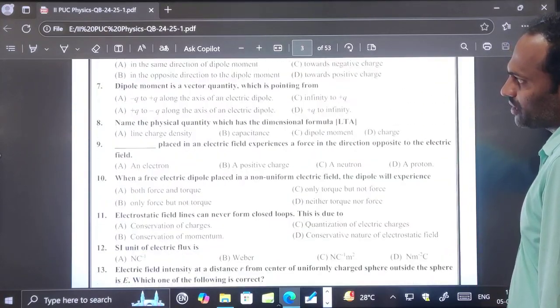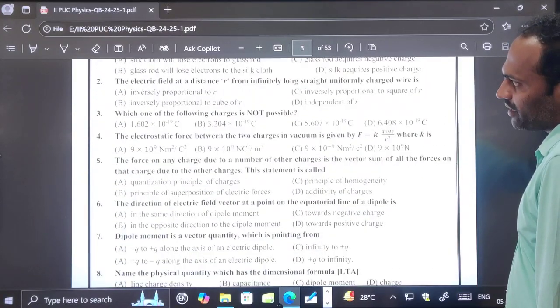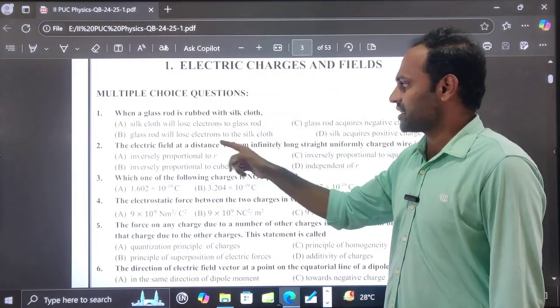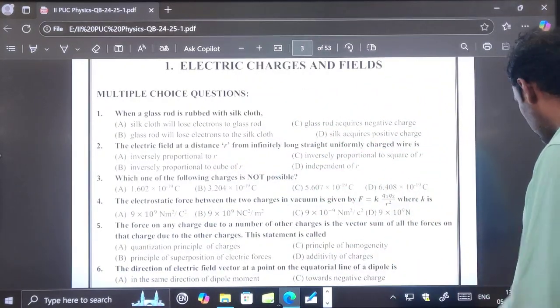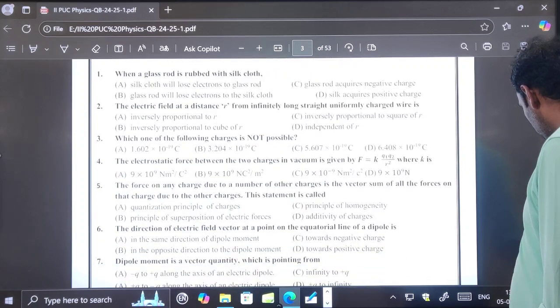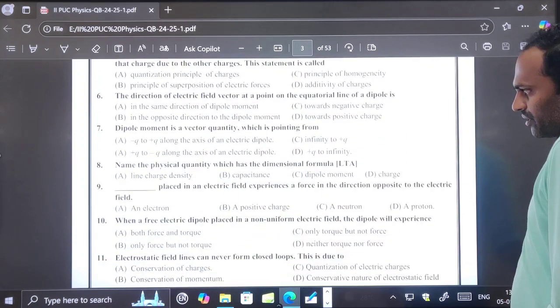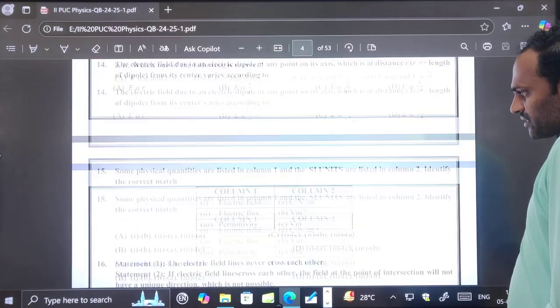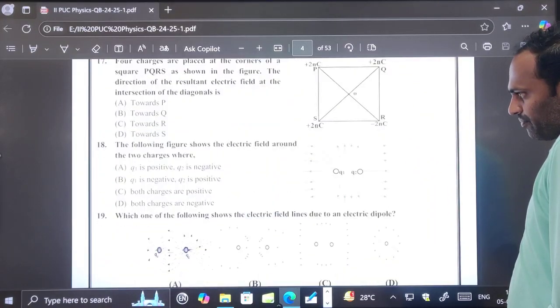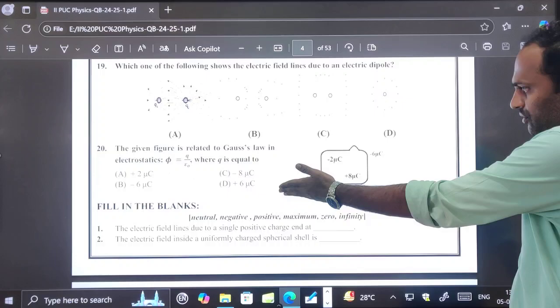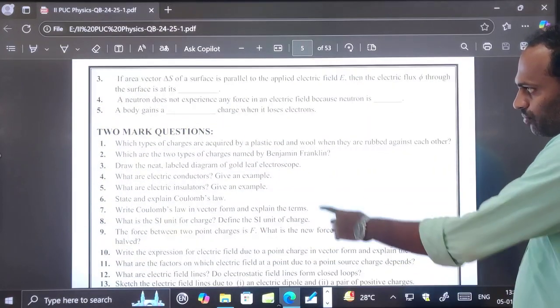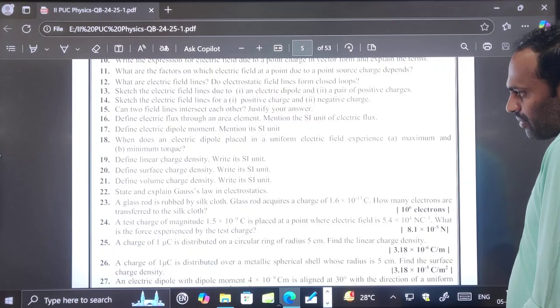Chapter-wise you will get all questions. This is multiple choice questions on electric charges and fields. On each chapter there are 20 MCQs, plus fill in the blanks, plus two marks, three marks, and five marks questions. These are the 20 MCQs and then we have fill in the blanks and two marks questions. It's a question bank.